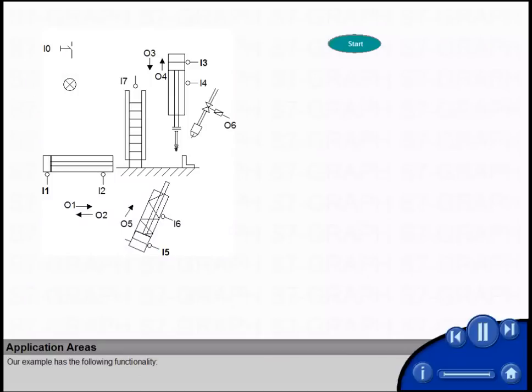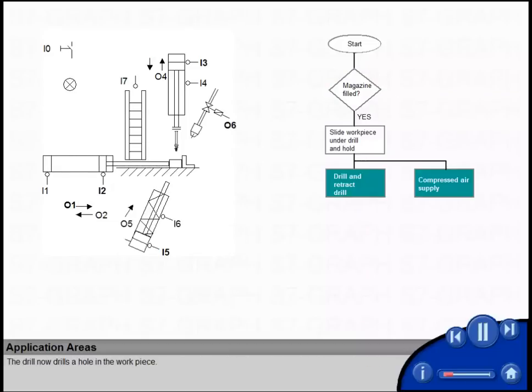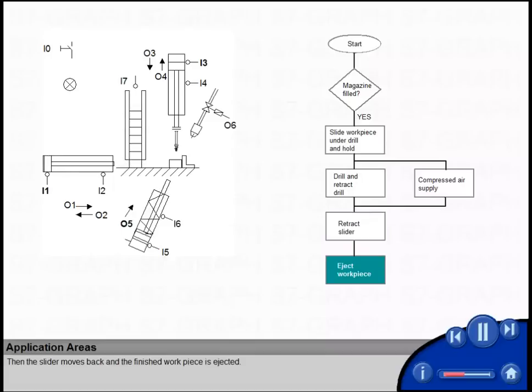Our example has the following functionality. After pressing the button for starting the process, the cylinder slides the workpiece from the magazine to the drilling machine. The drill now drills a hole in the workpiece. During the drilling process, compressed air for chip removal is applied until the drill is back in the starting position.